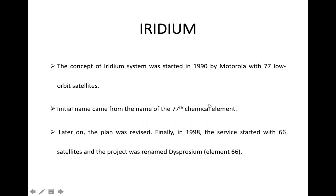The concept of the Iridium Earth system was started in 1990 by Motorola with 77 low Earth orbit satellites. The initial name came from the 77th chemical element in the periodic table, that is Iridium. Later the plan was revised, and finally in 1998 the service was started with 66 satellites, and the project was renamed to Dysprosium, that is the 66th element in the periodic table.